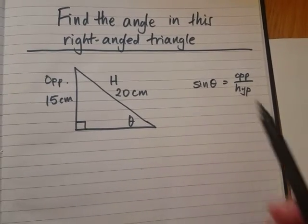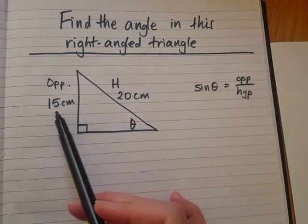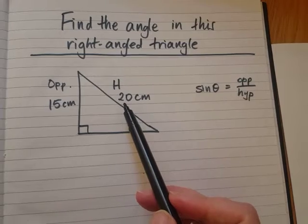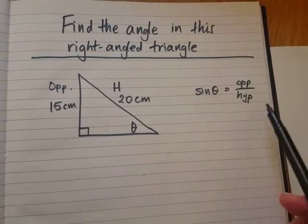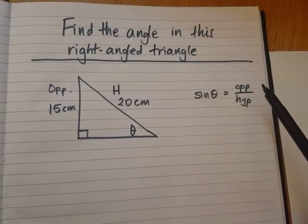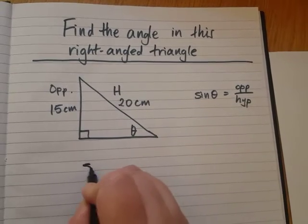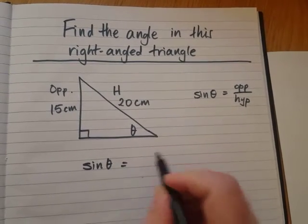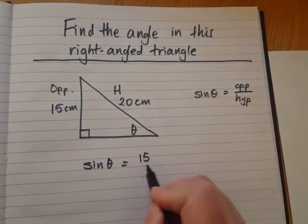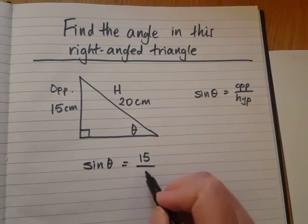So the next step is now to put in the numbers 15 and 20 into where they go in this formula. The opposite is 15. So that goes on the top line. And the hypotenuse is 20. That goes on the bottom line.